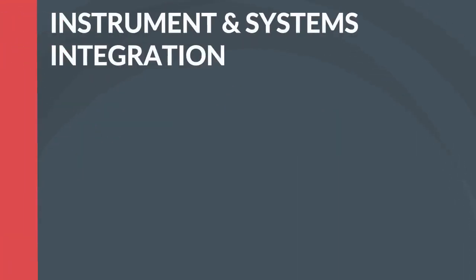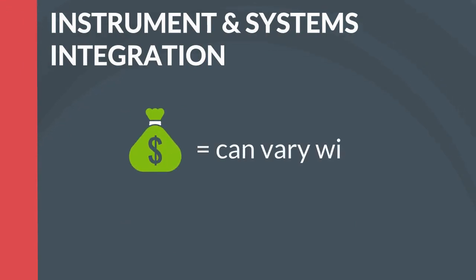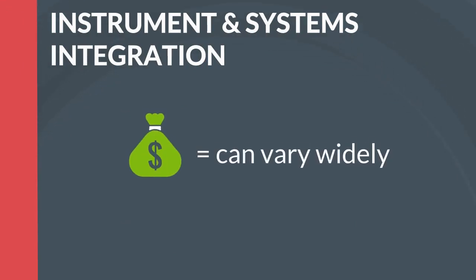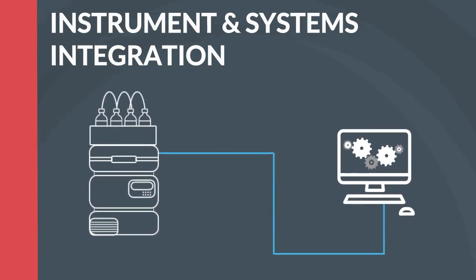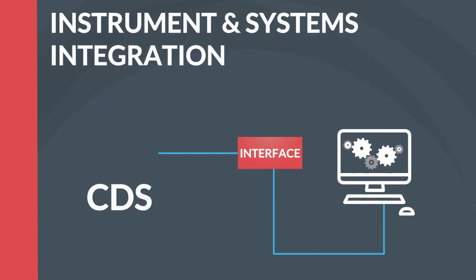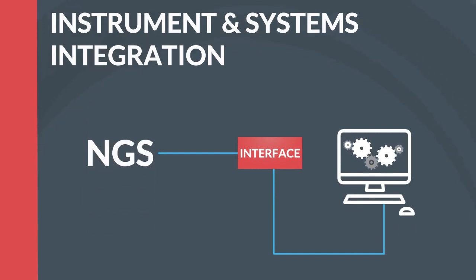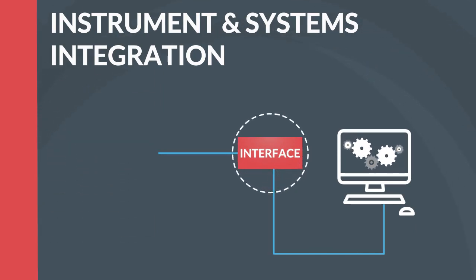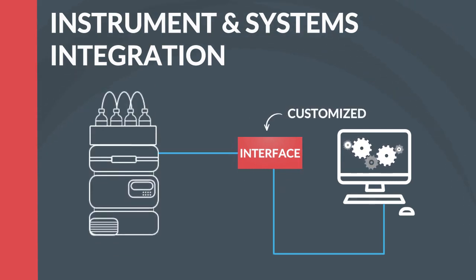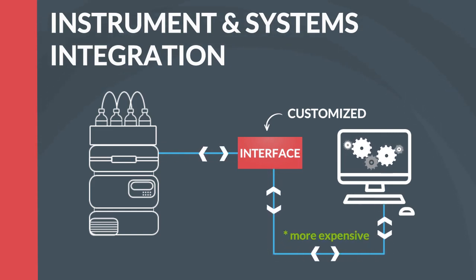Instrument and systems integration. The cost of integrating your instruments and systems to your LIMS can vary widely. Some LIMS vendors offer standardized interfaces for integrating their LIMS to some of the most utilized lab instruments and systems, like chromatography data systems, next-generation sequencers, and SAP. The cost of these interfaces also varies widely, as do the capabilities and functionality. Customized interfaces can also be developed, the cost of which will be very dependent on the complexity and type of interface. Simple one-way interfaces are less costly to develop than complex programmatic two-way interfaces.